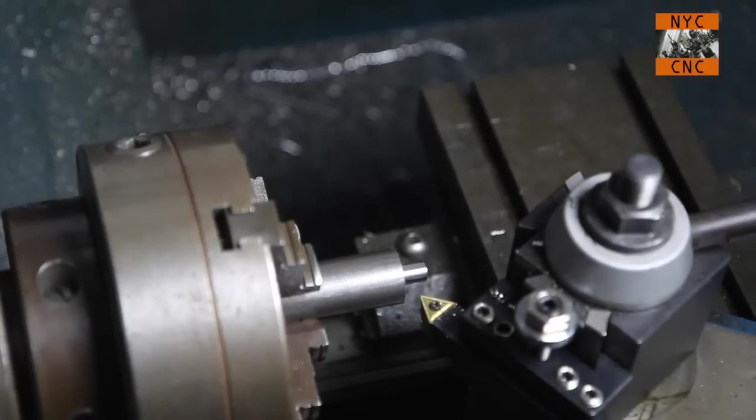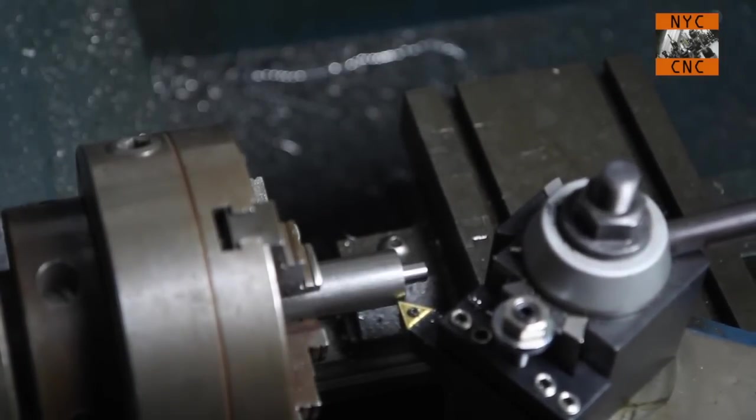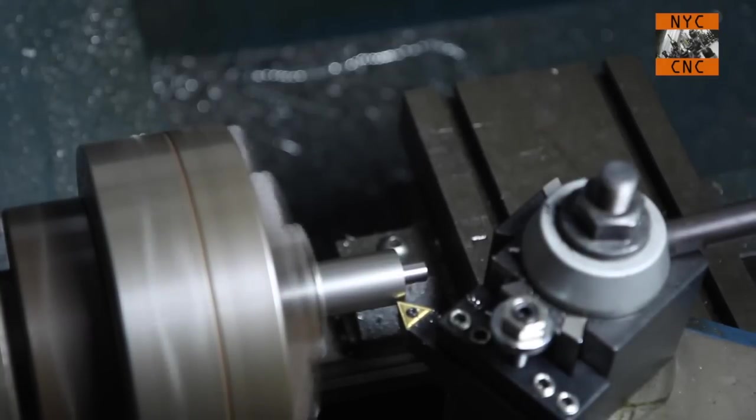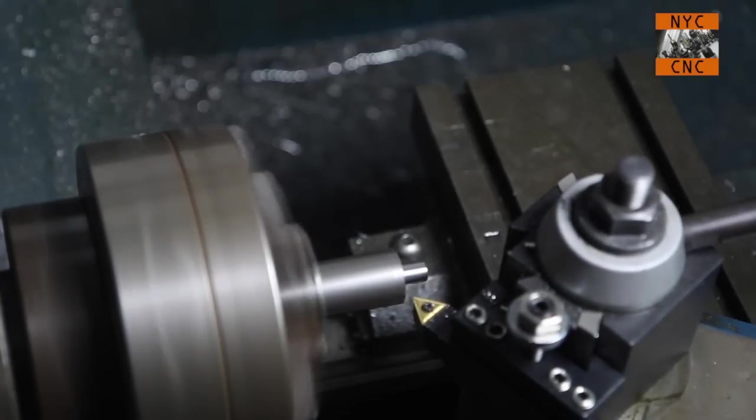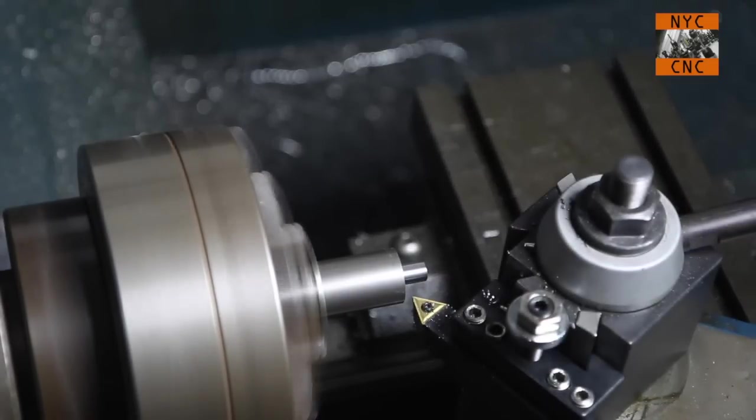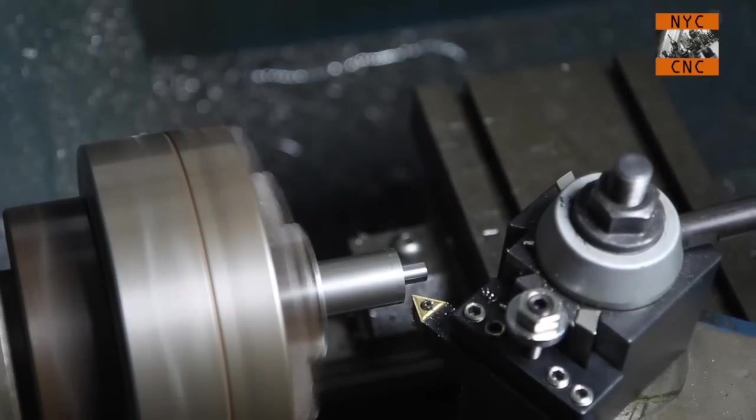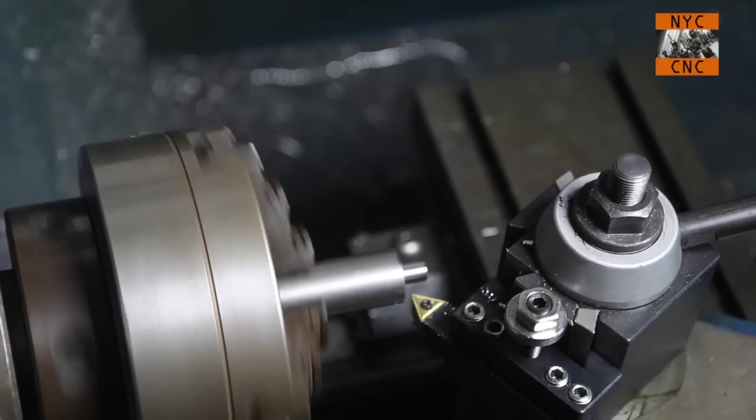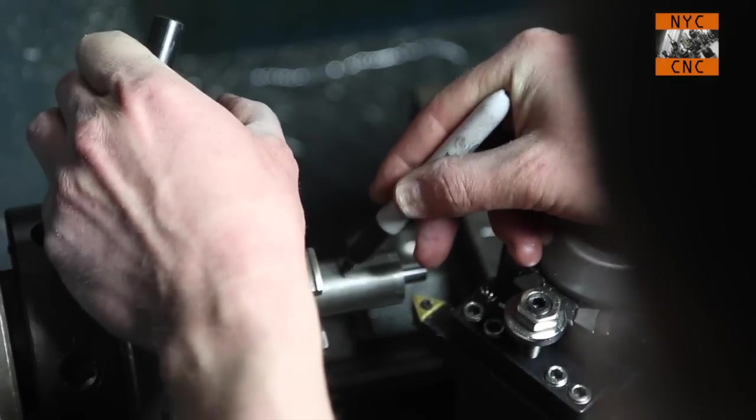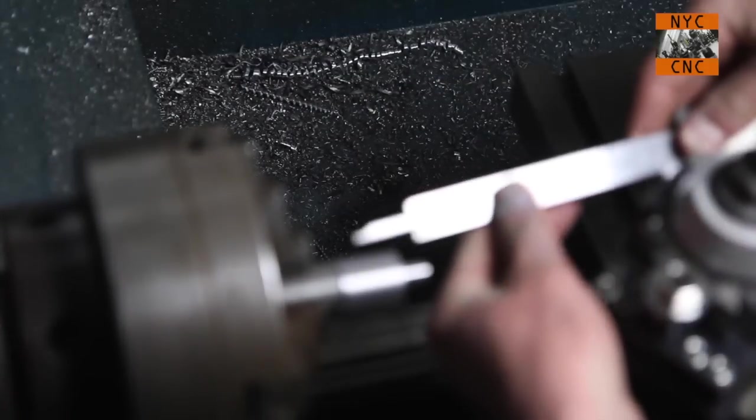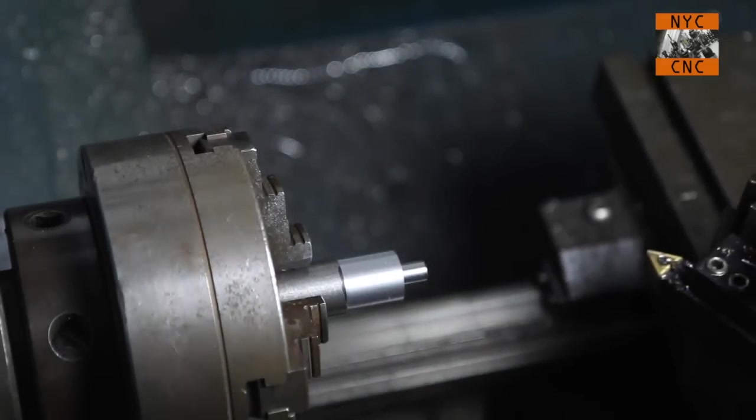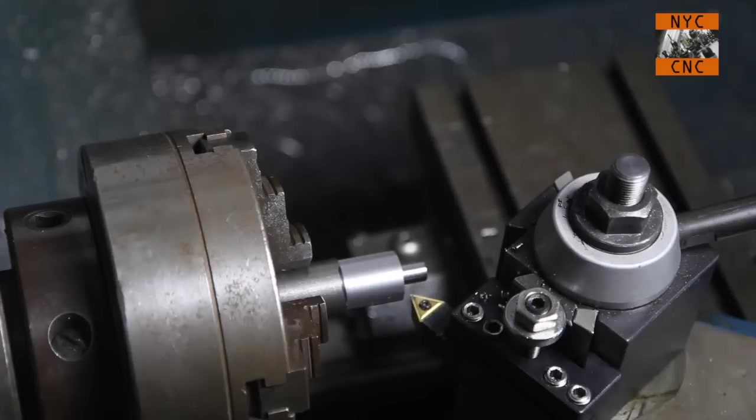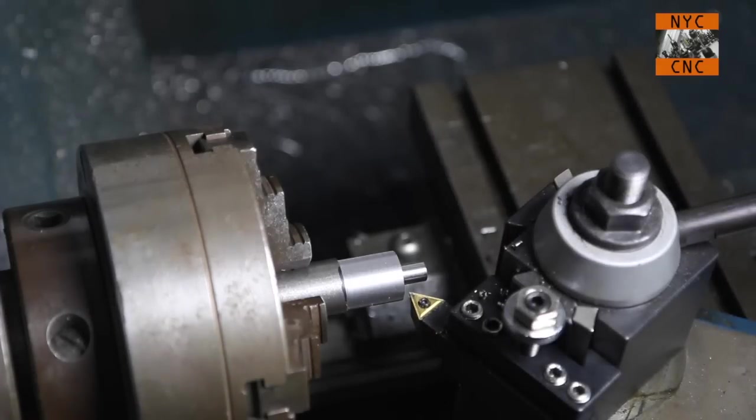We've got a 3/8 shaft turned. We'll thread that at the end. We're going to now turn this down to 5/8. So the way I do this, nothing fancy: touch off, set your dial to zero. Now one inch minus 0.625 is 0.375 divided by 2 is 0.1875. That's 187 on my dial. So I'll come in 50 and I want to mark a little spot here. See how we did. Perfect on the dimension there, or perfect within 3, 4 thou. That's all I needed. So we will turn this down another 50 and so forth until we sneak up on our 5/8. Be right back.